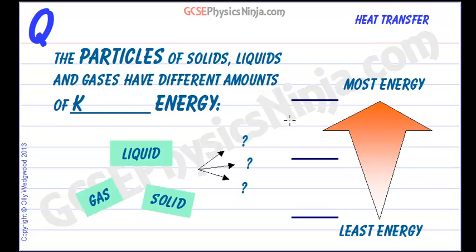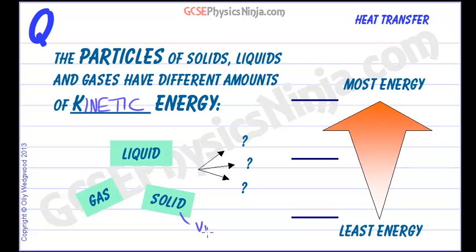The particles of solids, liquids and gases — the three states or the three basic states of matter — have different amounts of kinetic energy. Kinetic meaning movement energy. In a solid, the particles are vibrating about fixed points.